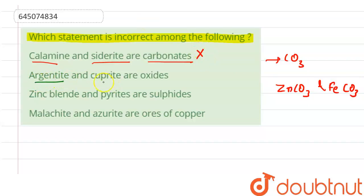Second, argentite and cuprite are oxides. As we know, argentite is Ag2S and cuprite is Cu2O. Argentite has the chemical formula Ag2S, whereas cuprite has the chemical formula Cu2O. Hence, argentite belongs to sulfide ore and cuprite is oxide. So this statement is incorrect. Option two is the correct answer.